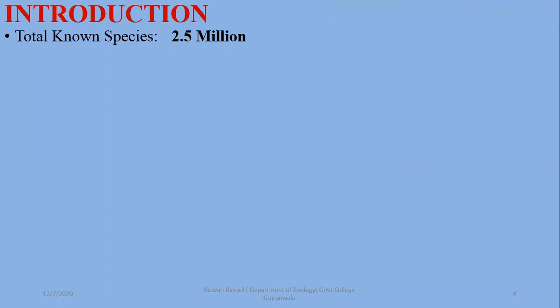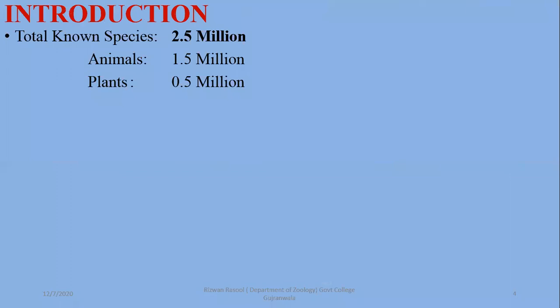The total known species of organisms are 2.5 million — you can also say 25 lakh. Out of these 2.5 million species, 1.5 million are animals and 0.5 million species are plants.